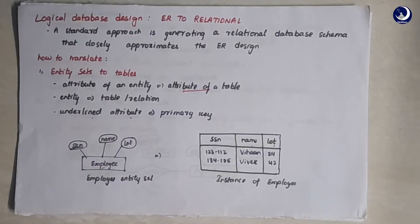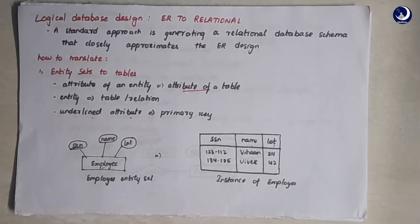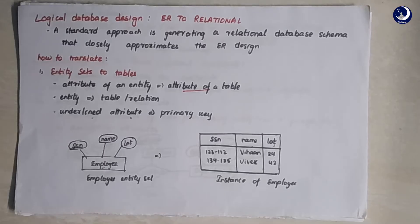Welcome back to demo tutorials on database management systems. This is the last topic in our second chapter. The topic we are going to discuss today is logical database design, which is basically the conversion of an ER model to a relational model. As discussed earlier, the ER model gives us an initial pictorial description of the database design. We have to transform that ER model into a proper relational database — transforming entity sets, relationship sets, and constraints into a set of tables.